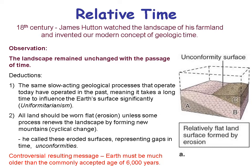Another deduction is that all land should be worn down flat unless some process renews the landscape by forming new mountains — cyclical change. The problem with Hutton's conclusion is that the Earth must be older than 6,000 years, creating a controversy between what you observe in nature and what people had generally interpreted the Bible to say. We still have that controversy today.